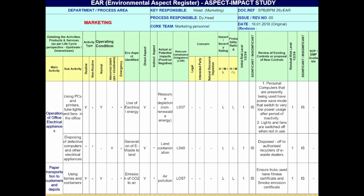This EAR format is for the marketing department. The earlier two slides pertained to technical aspects from the boiler house. Here too, some of the main activities identified in the marketing department which can have an impact on the environment are given. Some examples of sub-activities are: using PCs, printers, tube lights and fans in the office; the sourcing of defective computers and other electric appliances; using lorries and containers for delivery of finished goods to the customers; and their related interactions with the environment are also given correspondingly. Please go through all the columns for better understanding.